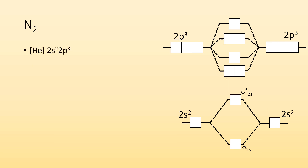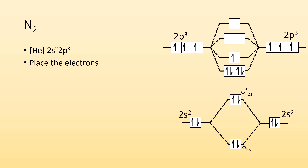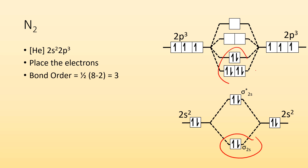Nitrogen electron configuration: 2s2, 2p3. Place the atomic electrons and then fill all 10 electrons into the molecular orbitals. We get 8 bonding electrons and 2 anti-bonding electrons. One half of 8 minus 2 gives us 3. N2 has a bond order of 3.